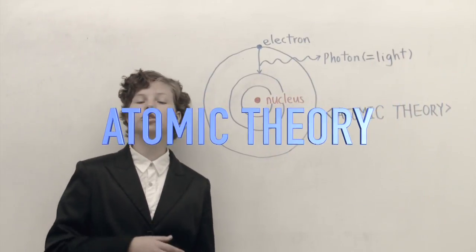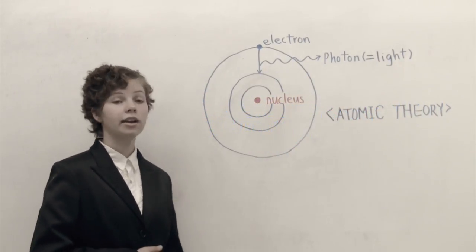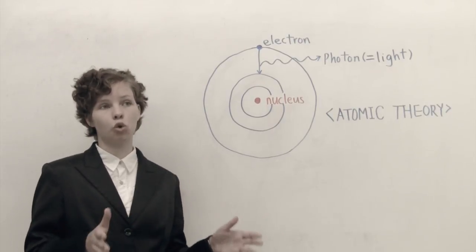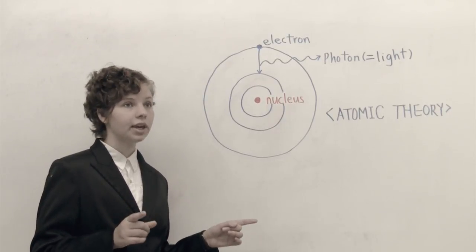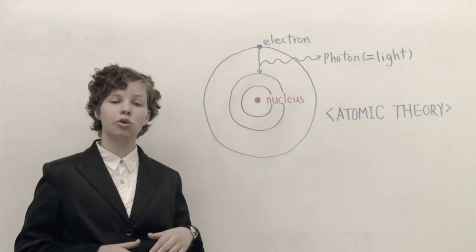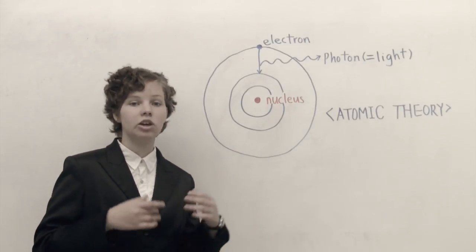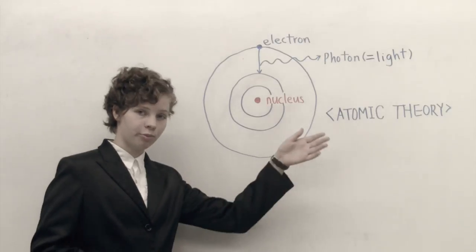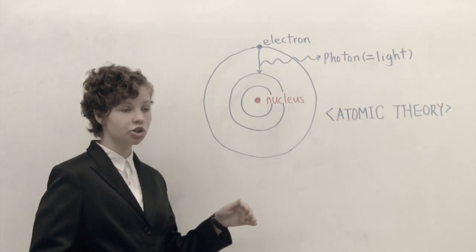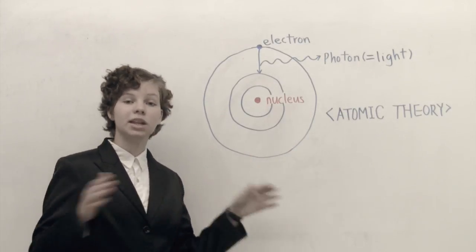According to my atomic theory, an electron is restricted to a particular circular orbit, but it can jump from a lower energy orbit to a higher energy orbit if they absorb light. They can also do the opposite, fall from a higher energy orbit to a lower energy orbit if they emit light.